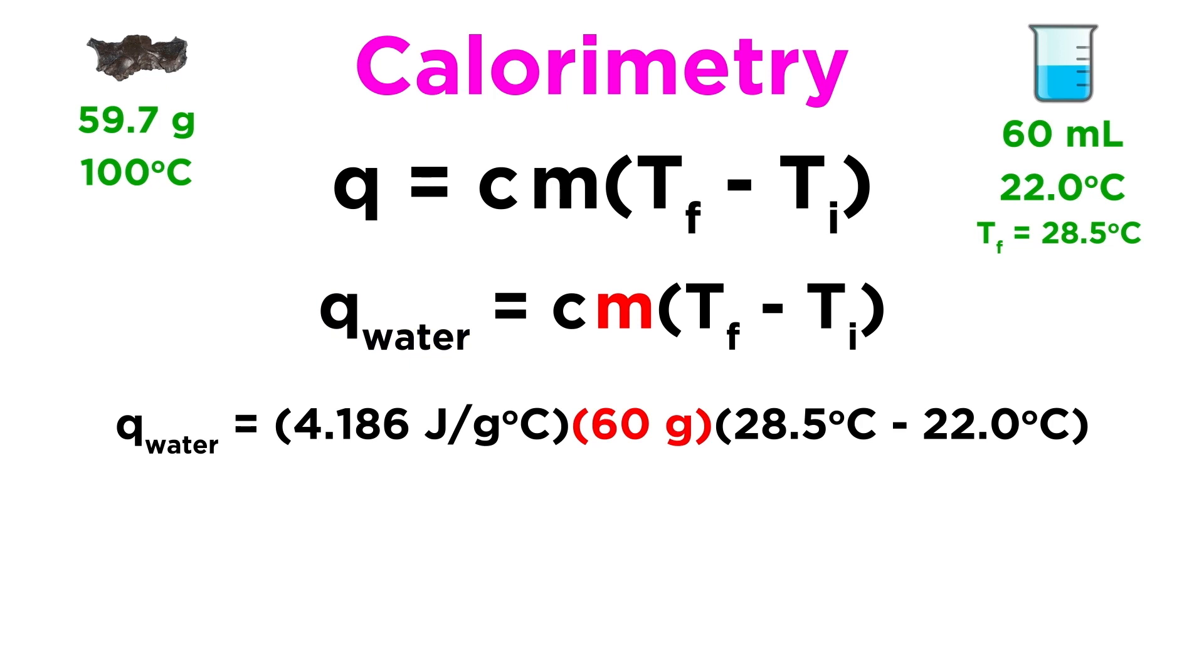Since water is one gram per milliliter, it's easy to get the mass of the water. The specific heat of water is a known value that is always the same, and we know the initial and final temperature of the water, so let's plug those values into the equation. We should get 1632 joules, which is the heat absorbed by the water.